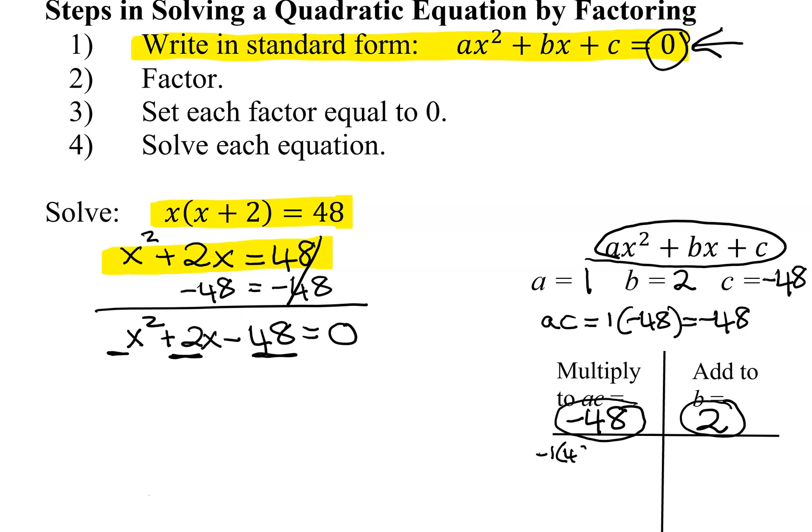Definitely multiply to negative 48, and negative 1 plus 48 is 47, way away from what I need. So what I'm going to do is pause it quickly and work out the rest of this table.